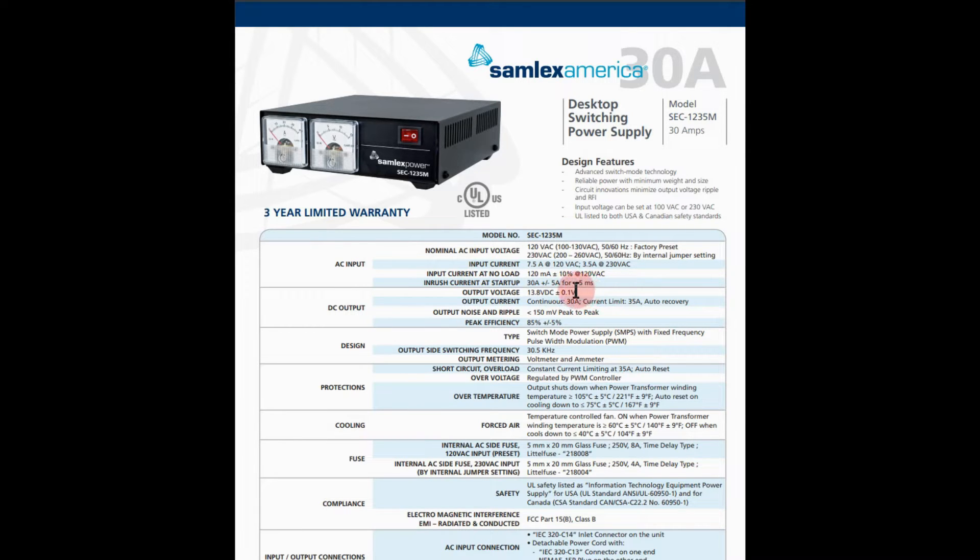The output voltage is 13.8 volts and it's pretty level, plus or minus 0.1 volt. It also has continuous amp output of 30 amps and a current limit of 35 amps. All in all I like the three year limited warranty and the minimized output voltage ripple and radio frequency interference. Such good characteristics on this.